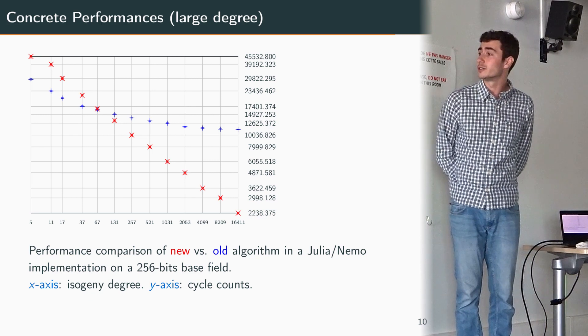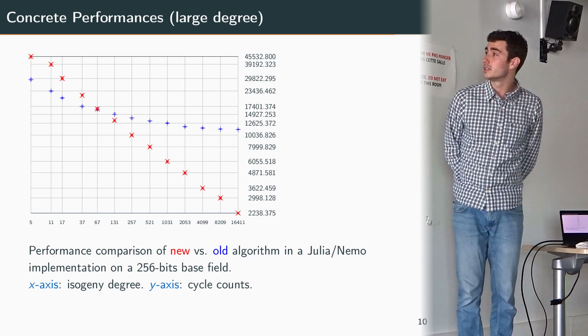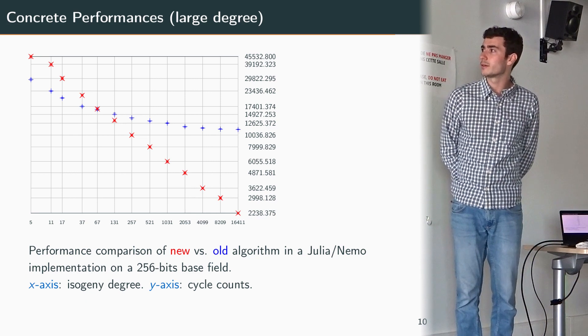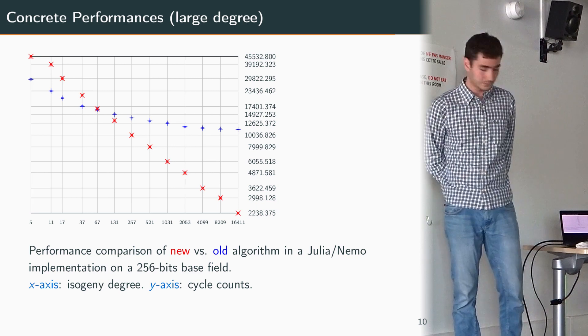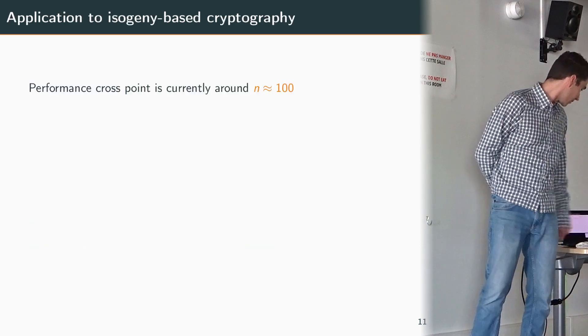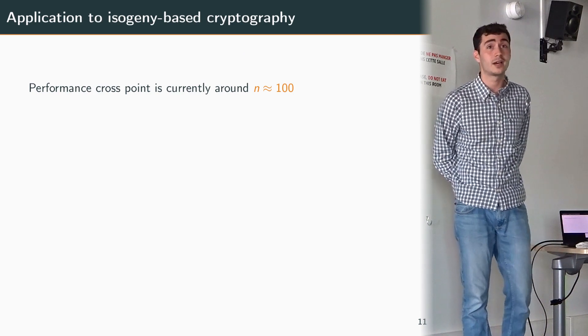Then we also push the computations for large degrees and we see that already for degrees up to a few thousands the new method becomes really more efficient, maybe something like one order of magnitude faster than the old one.